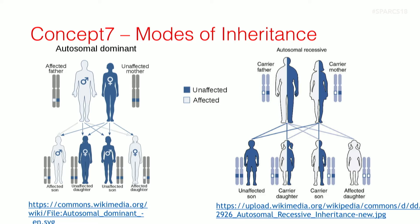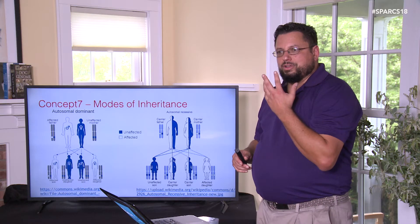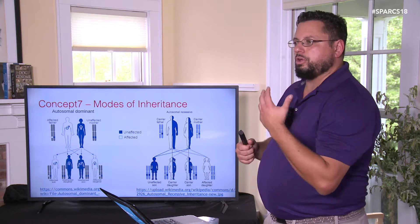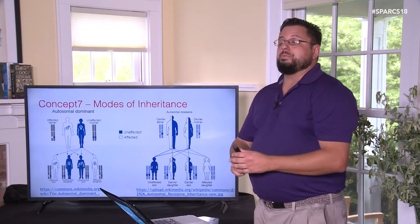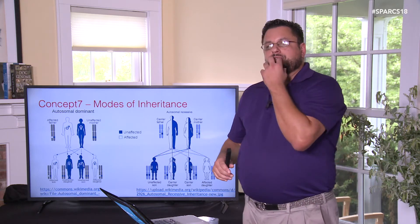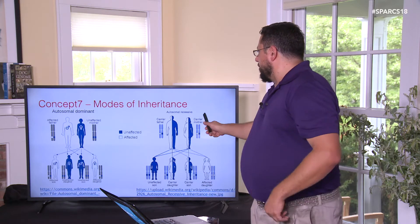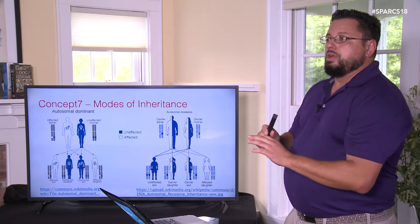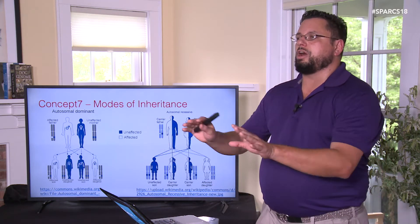Some traits are recessive and some are dominant. Some breeds of dog are fixed for a particular allele, meaning they have no variation whatsoever at that position. For example, the allele associated with brachycephaly — the short face of a French bulldog — is absent from the German shepherd population entirely. When an allele is fixed, whether dominant or recessive is not really an issue because there's no other allele in the population; they can only pass that trait on.